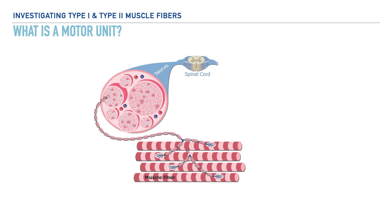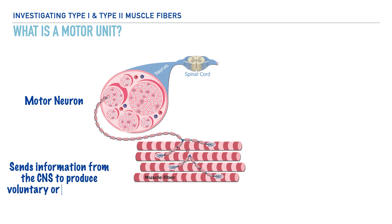To understand this principle, we need to understand what is meant by the term motor unit. A motor unit includes two components: first, a motor neuron — also known as a motor nerve — which is responsible for transmitting information from the central nervous system to produce either voluntary or involuntary movements. In addition, a motor unit includes all of the skeletal muscle fibers that are innervated by this single motor neuron. So the entirety of the image shown here is a motor unit.